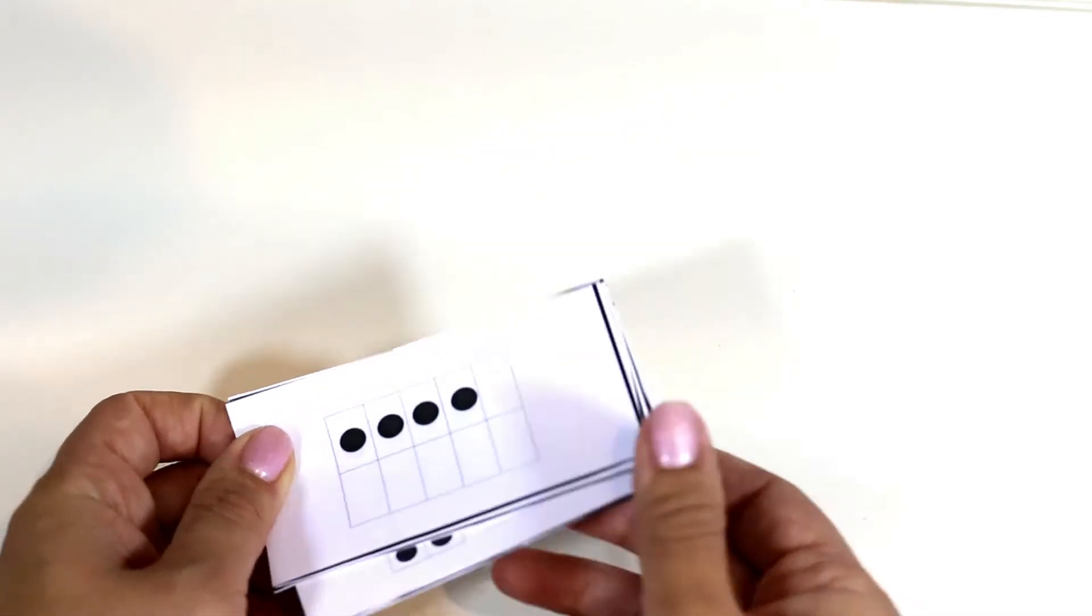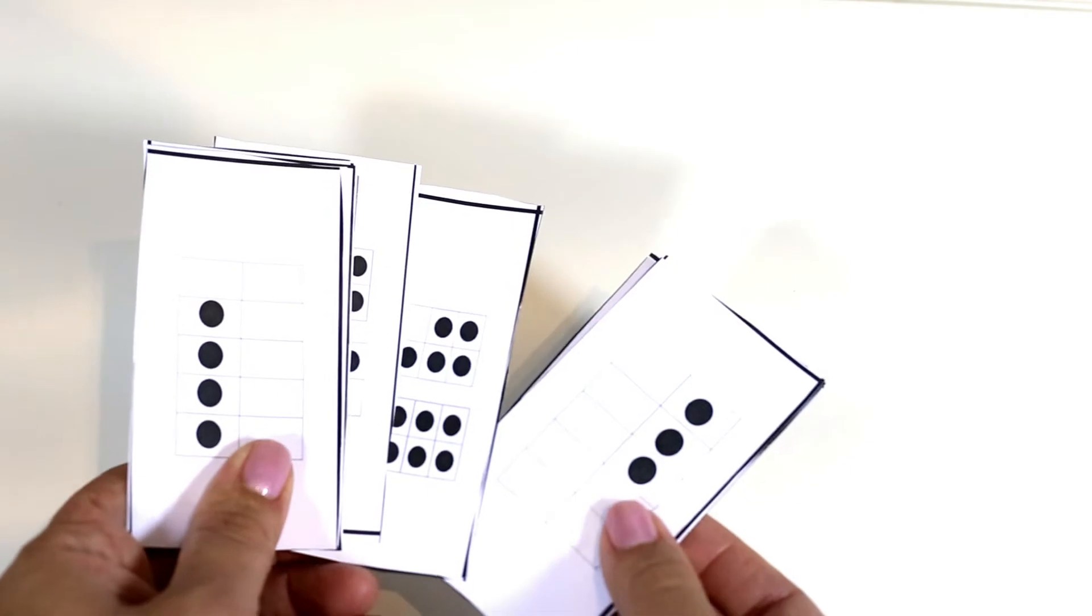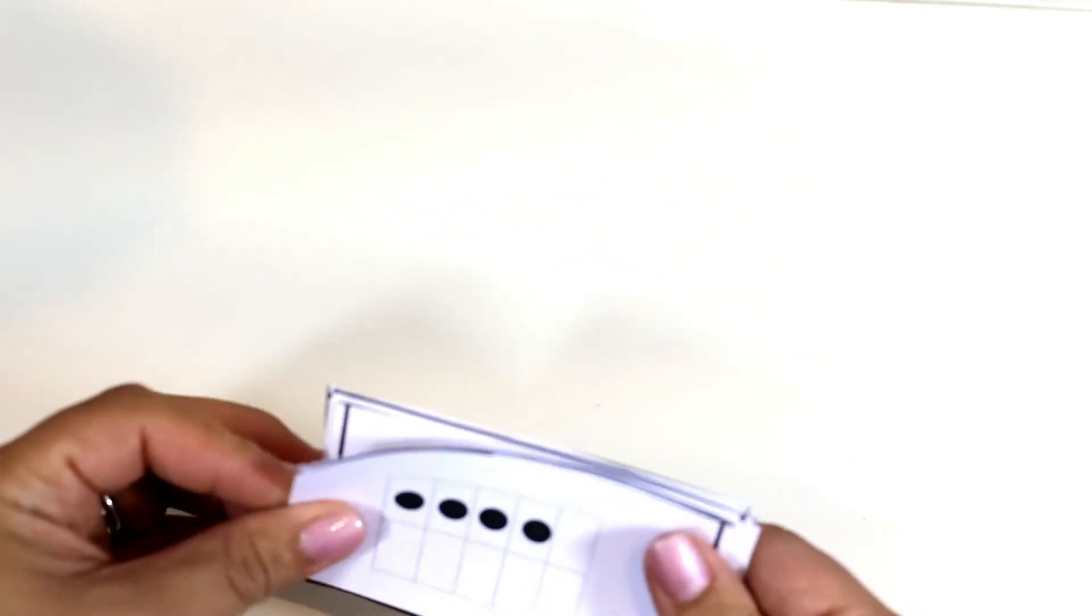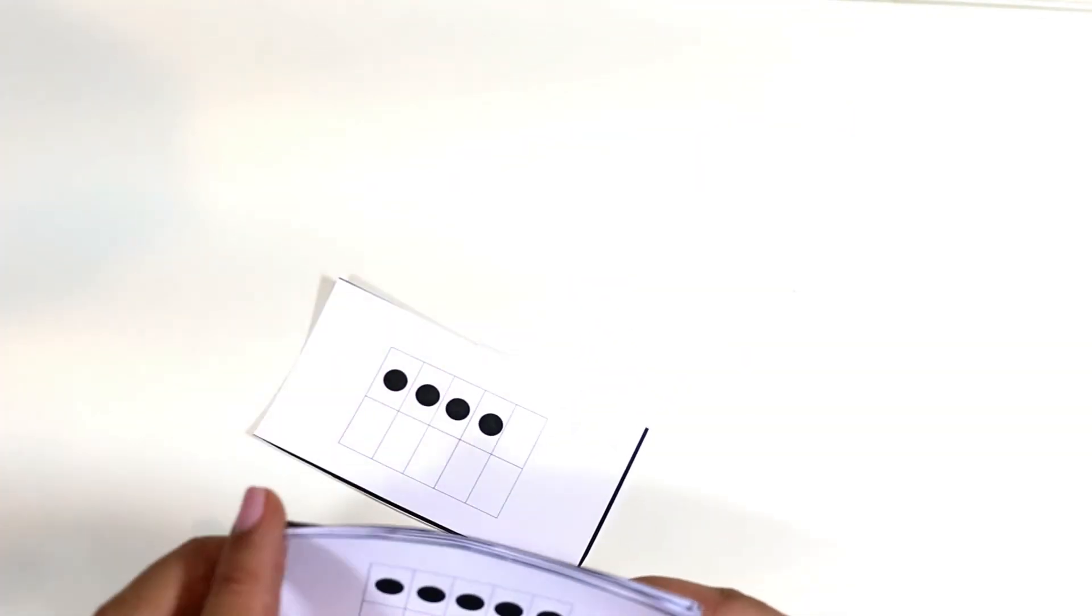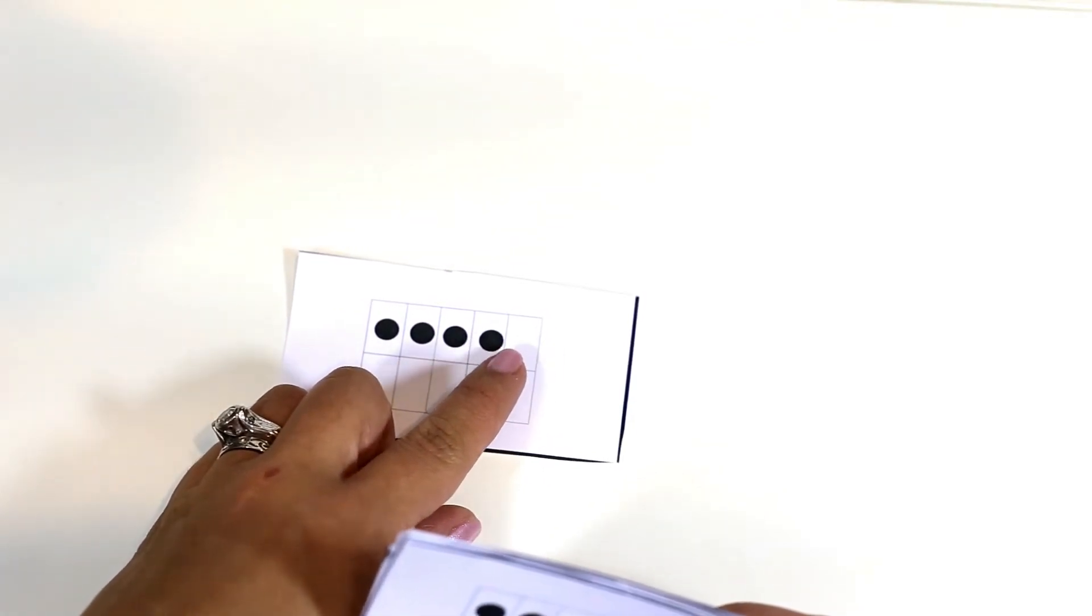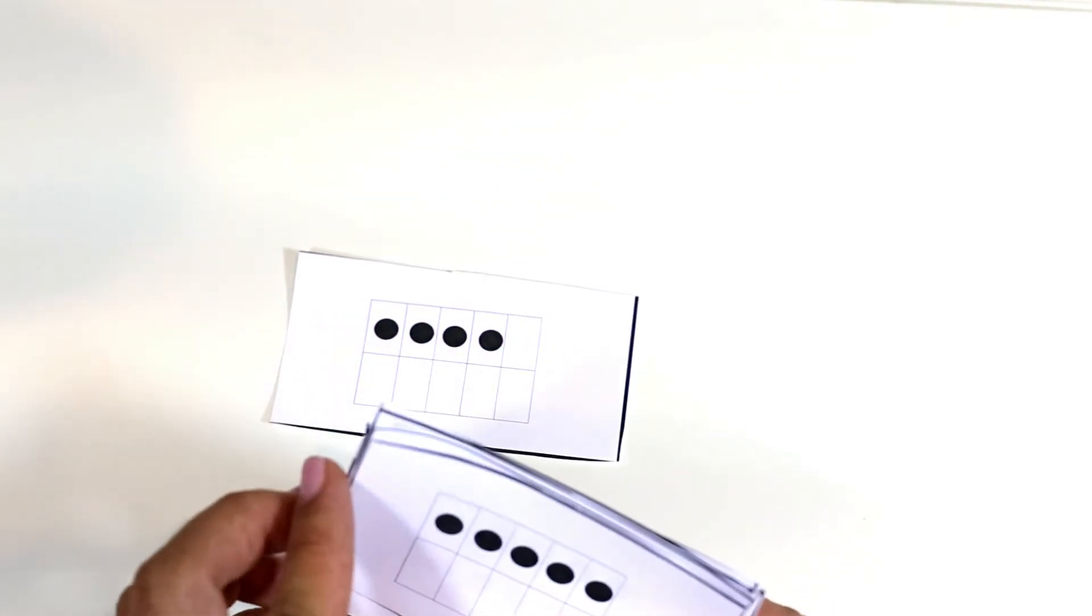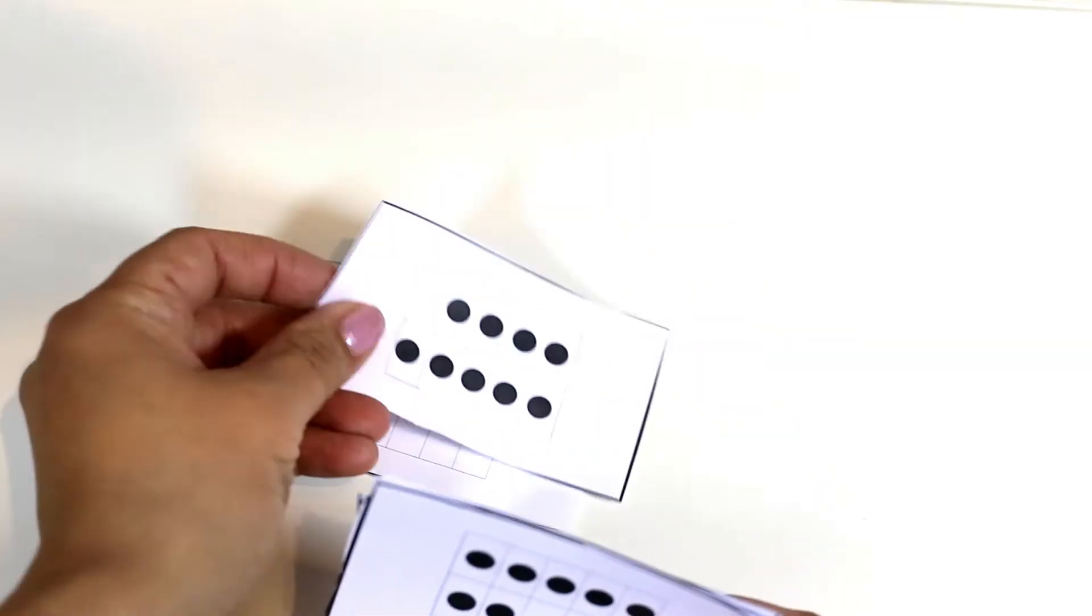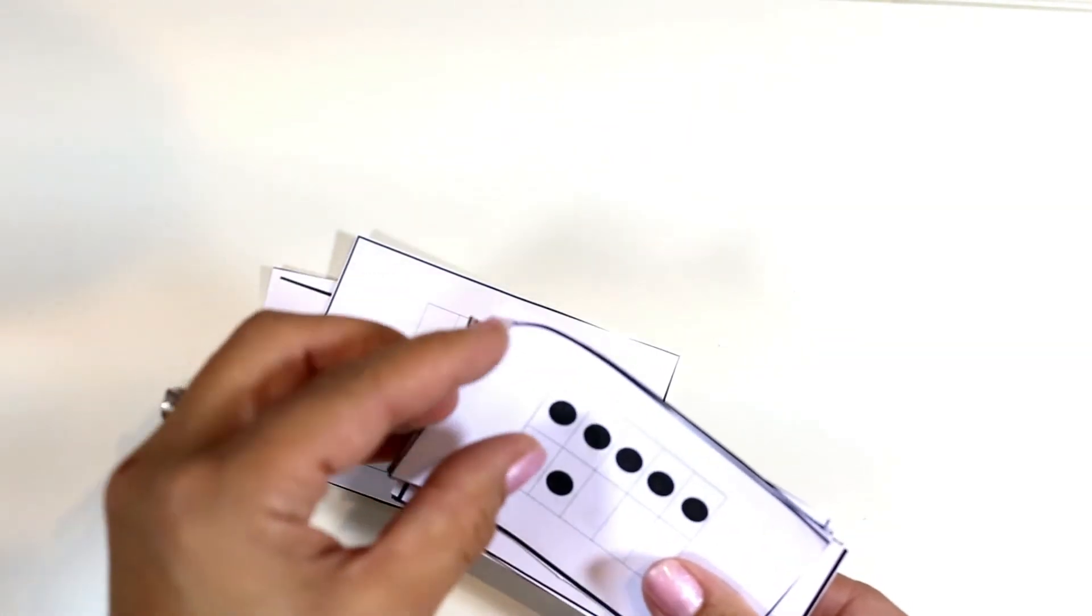So these set of cards are also part of the download and basically what they do is I just show them a card and they have to say the number as fast as possible. Four and obviously if they see that one is missing then there's four there. Five, nine, seven.